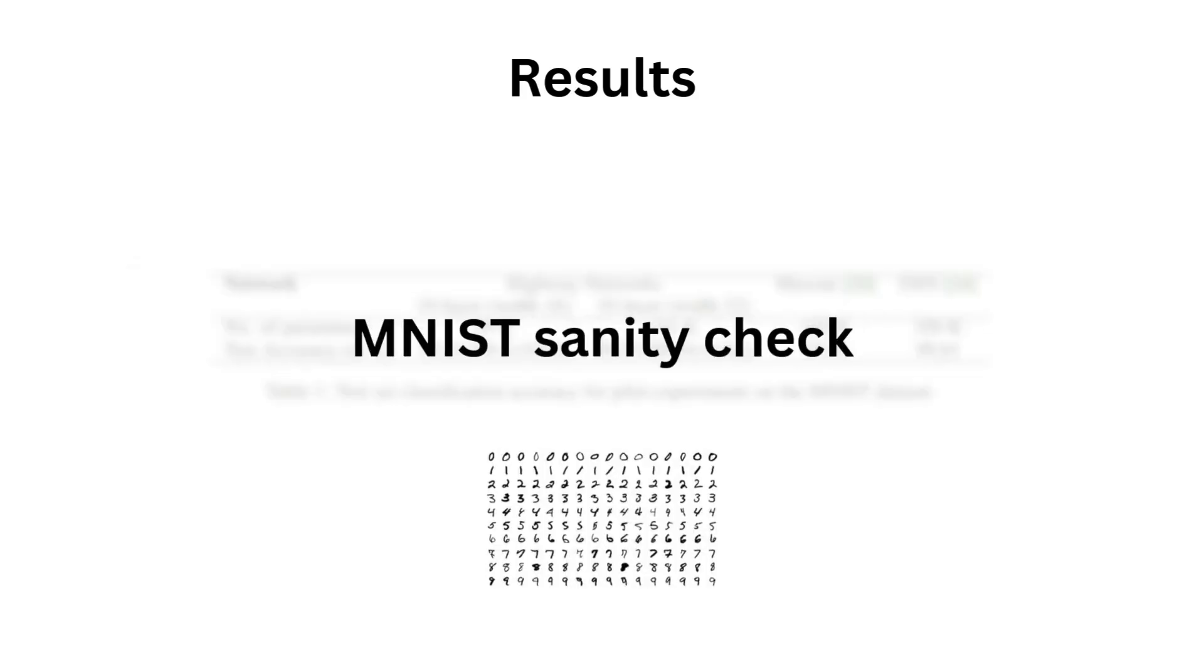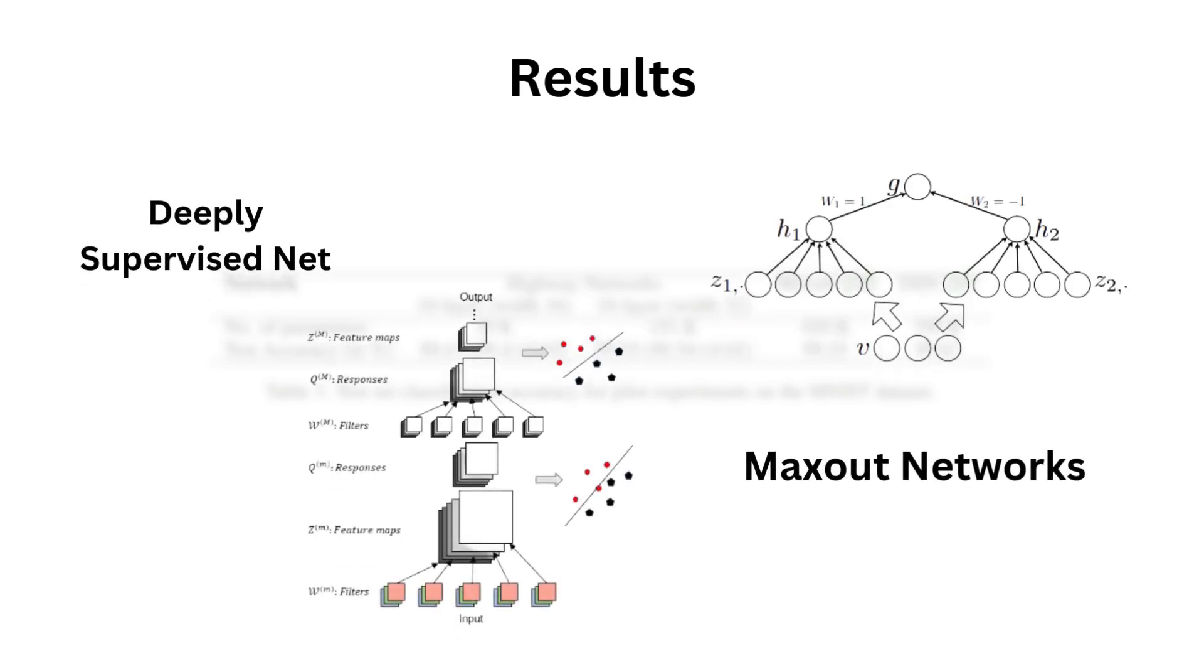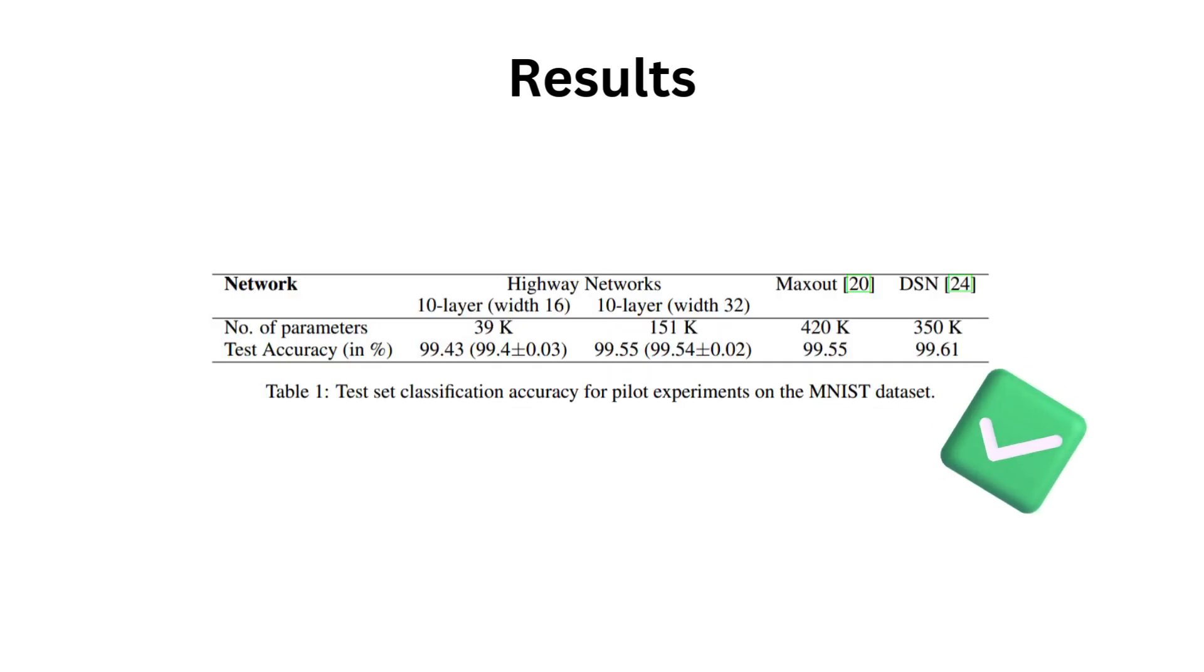The author did a second sanity check with the MNIST dataset. The two networks they were testing against were the state-of-the-art at the time, which was the deeply supervised net and the maxout network. From their experiment, they saw that they achieved similar performance to the two networks on the same MNIST benchmark, interestingly with way fewer parameters.